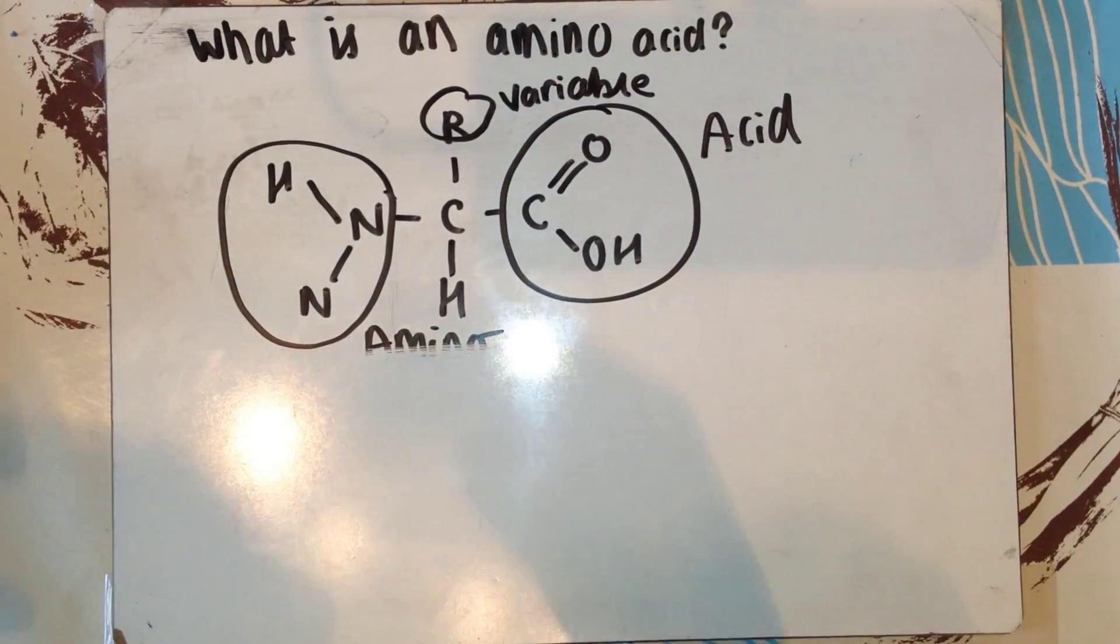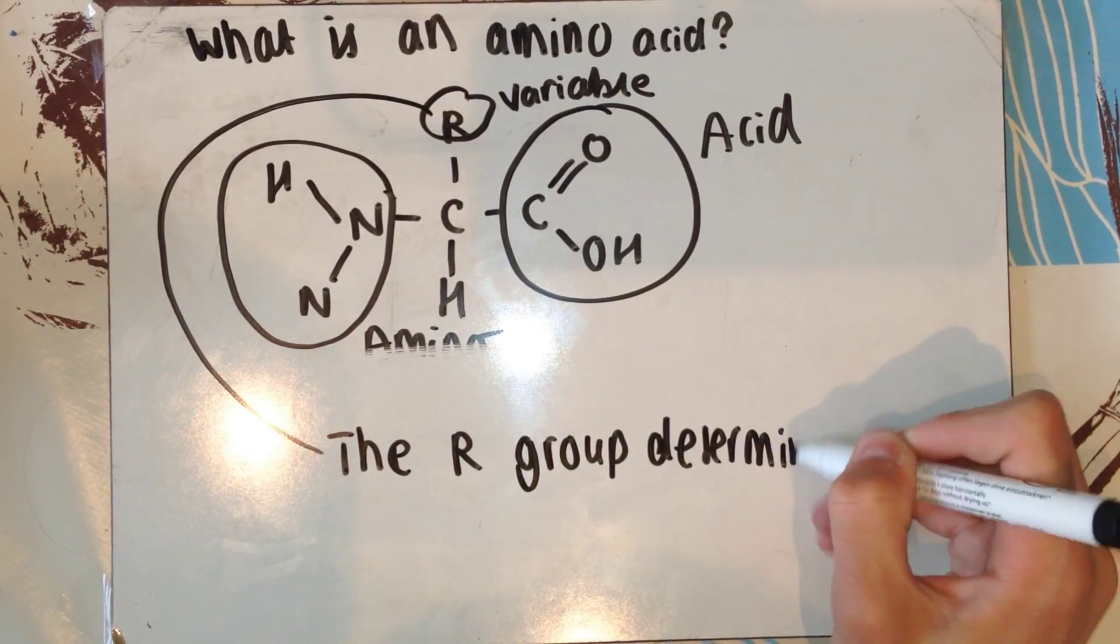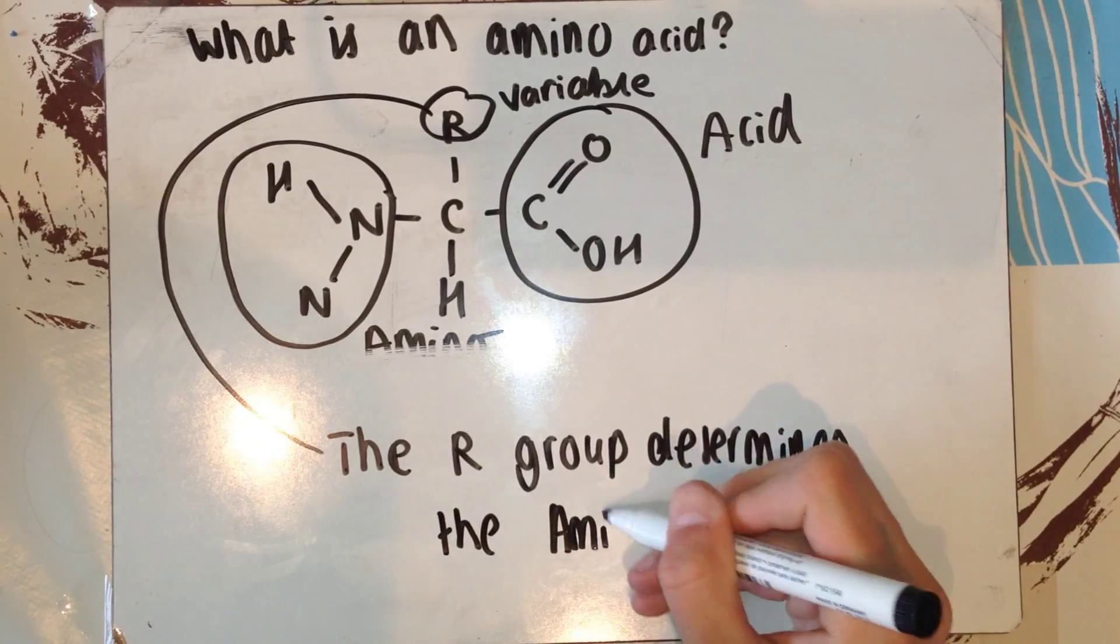This is how you differentiate between amino acids. There are 20 main types of amino acid and each one will have a different R group, but the same basic structure remains throughout.